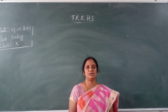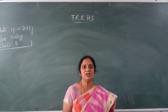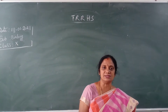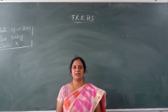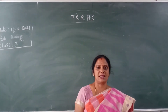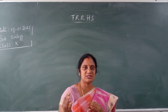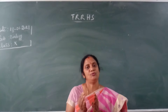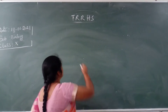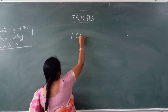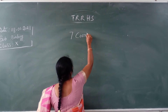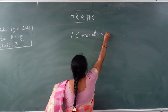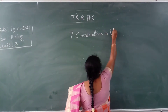In the previous class we discussed about how digestion occurs in the stomach. Today we are going to discuss about how digestion takes place in the intestine, and how the muscular system and nervous system help for the digestion of food. So what is our lesson today? Coordination in life processes.